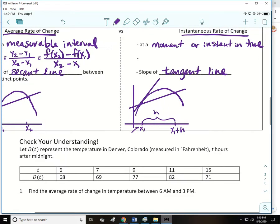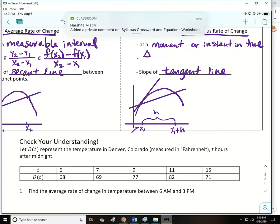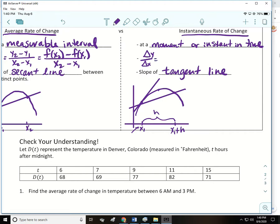When you're looking for the instantaneous rate of change, you're looking for the slope of the tangent line. So we're going to go back up to that little dash and do the change in y over the change in x, but we're going to use the points x sub 1 and x sub 1 plus h.